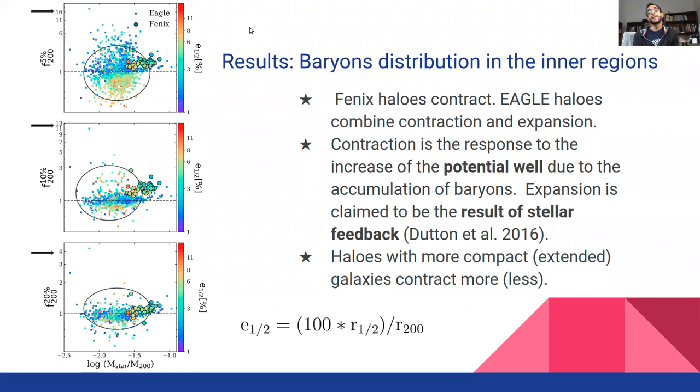When these ratios are measured at 10 or 20% of the virial radius in the middle or the below panel, this trend gradually disappears.